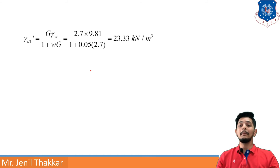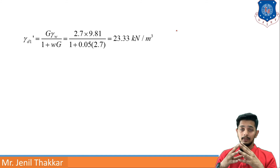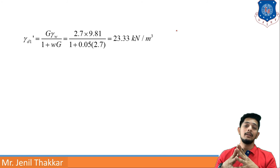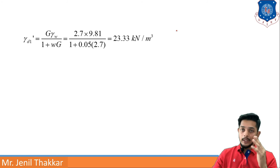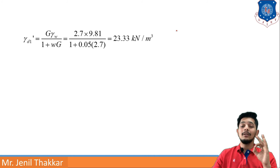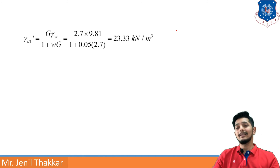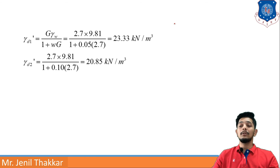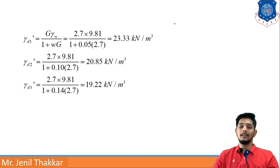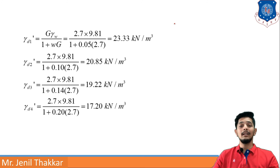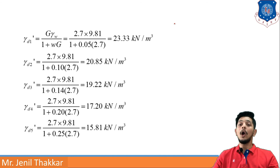Now I calculate the zero air void (full saturation) γd values by setting Sr = 1 in the formula for each water content. Using G = 2.7 and γw = 9.81: γd1' = 23.33, γd2' = 19.22 (for w2), γd3' = 19.22, γd4' = 17.20, and γd5' = 15.81 kN/m³. These points form the zero air void line.